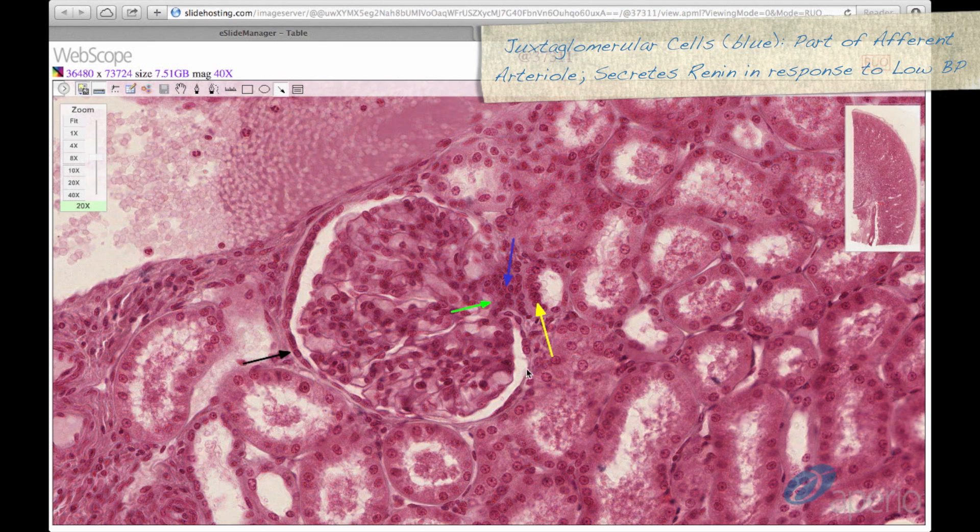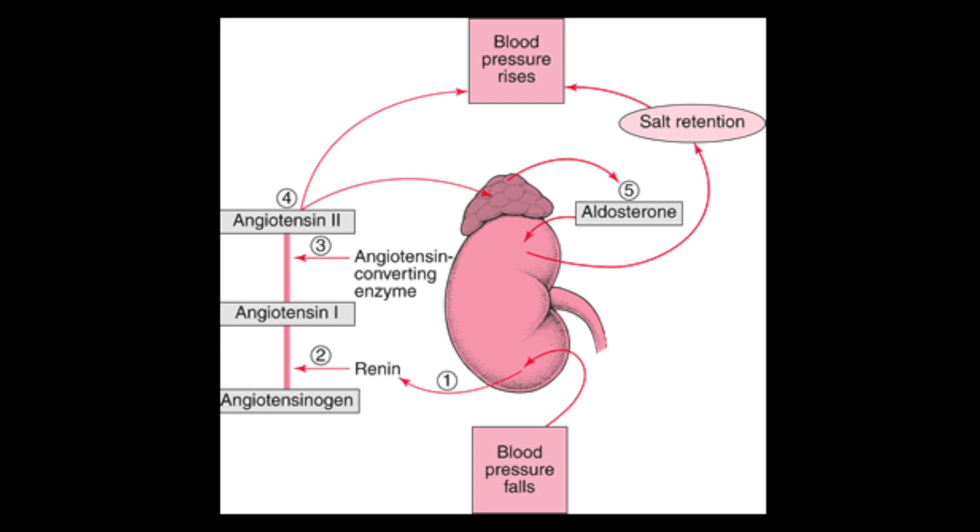We can also see juxtaglomerular cells, a portion of the afferent arteriole here at the blue arrow. Juxtaglomerular cells are responsible for the production of renin in response to low blood pressure. Renin converts angiotensinogen to angiotensin 1. Angiotensin 1 then passes through the heart and lung where it is converted to angiotensin 2 by ACE or angiotensin converting enzyme. Angiotensin 2 then causes the release of ADH and aldosterone, which act at the distal convoluted tubule and collecting duct to increase water absorption.